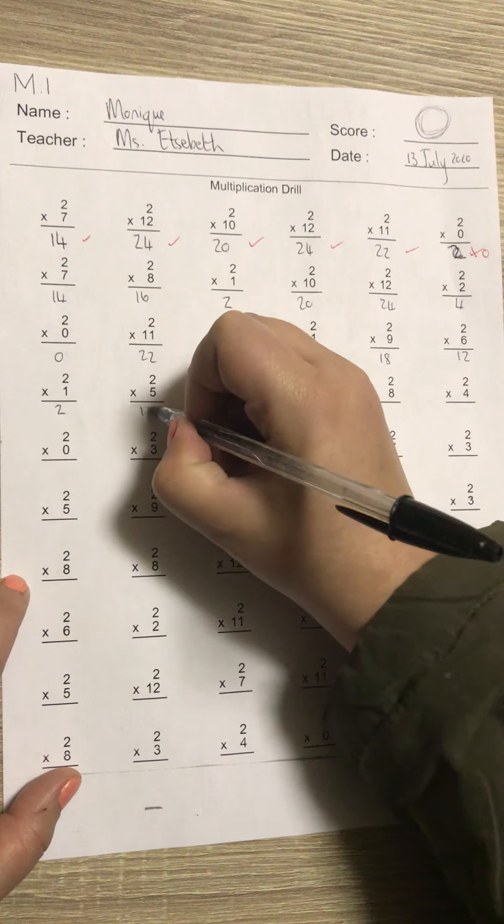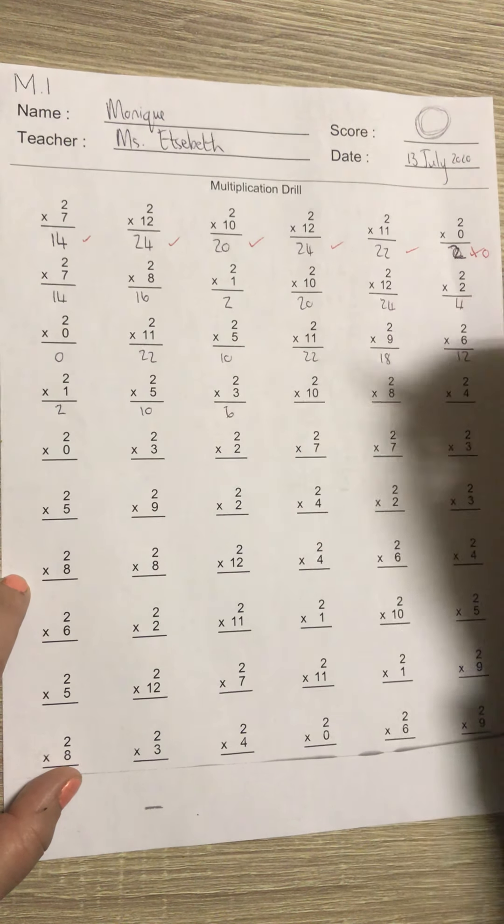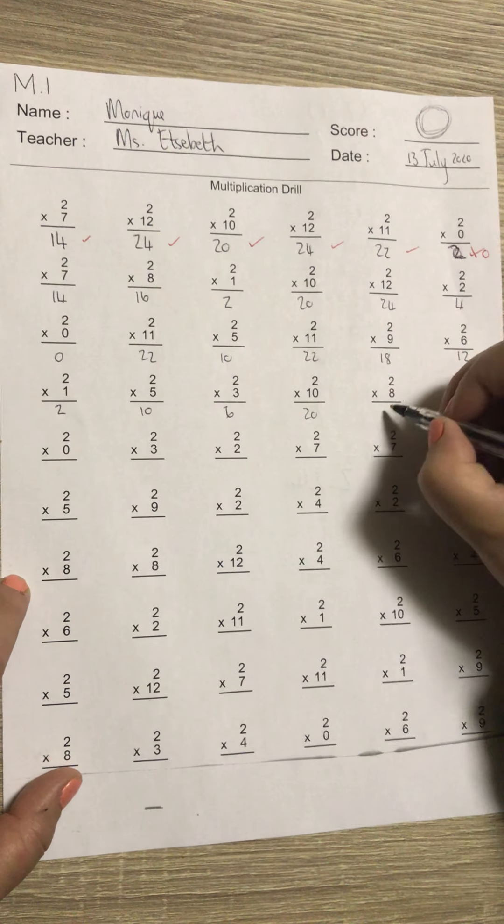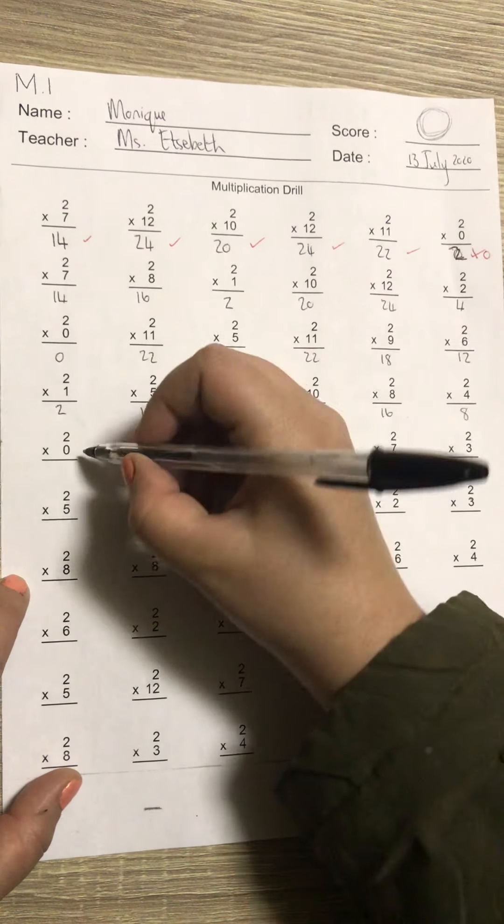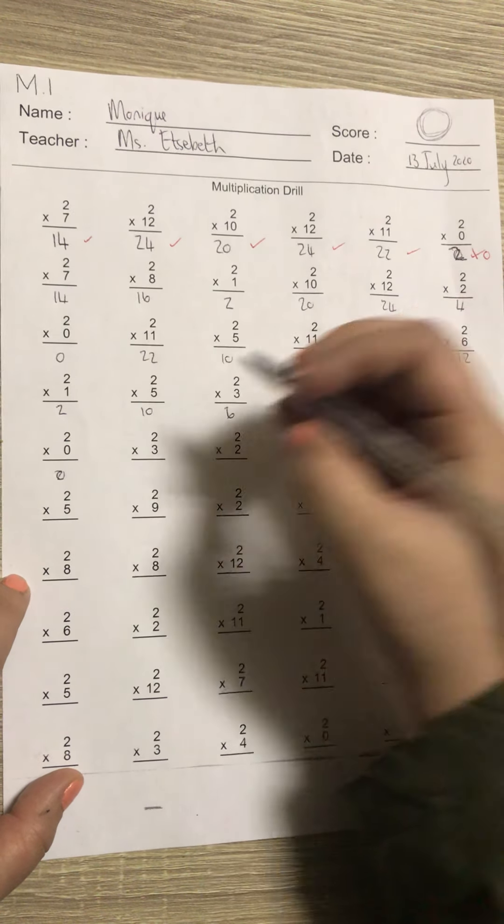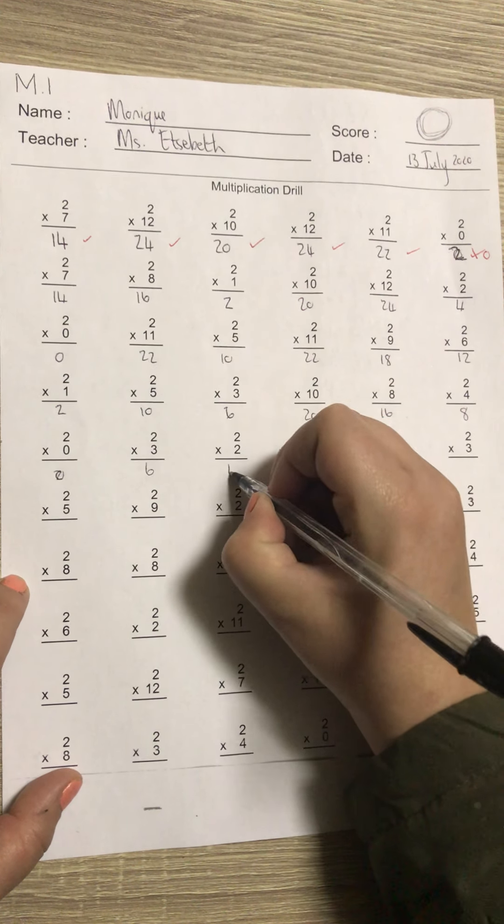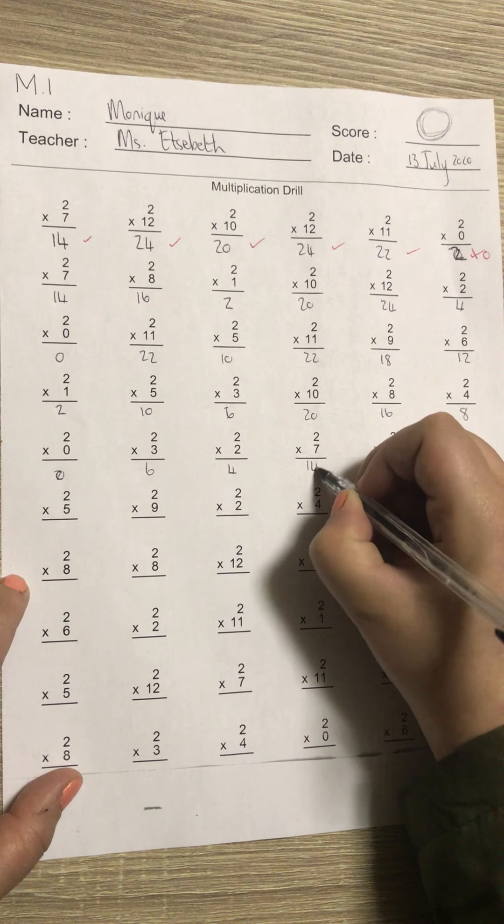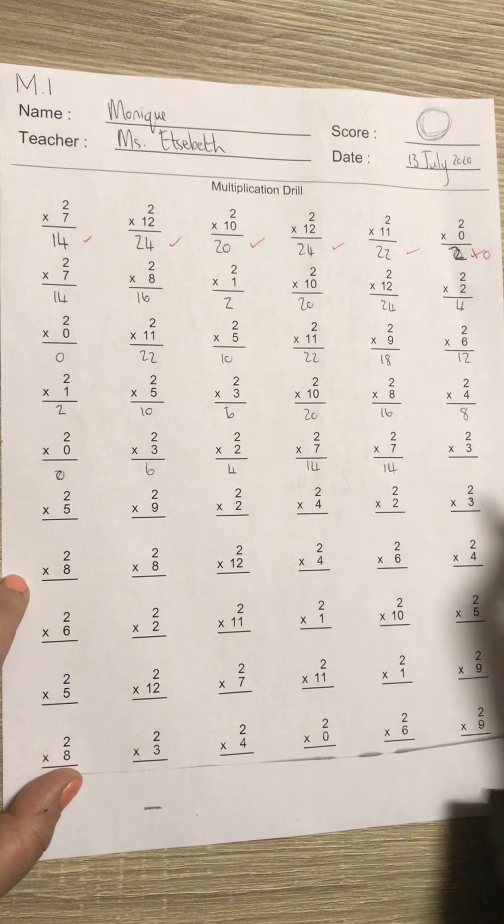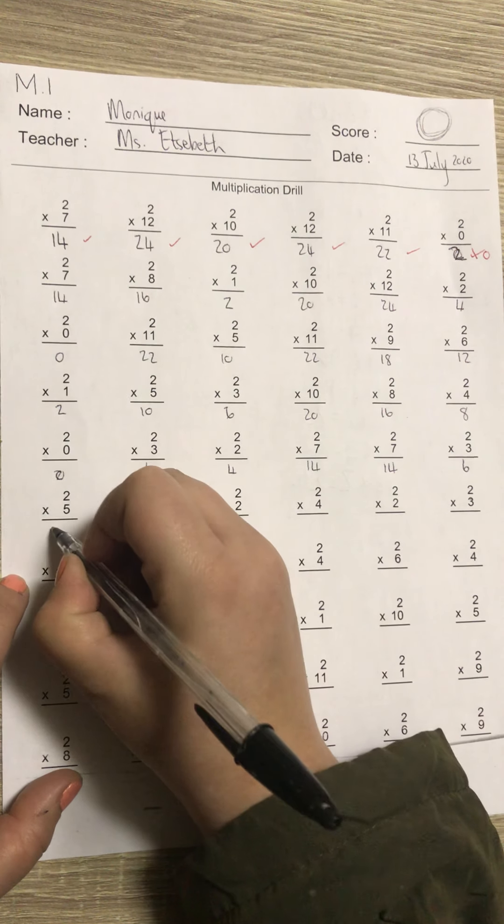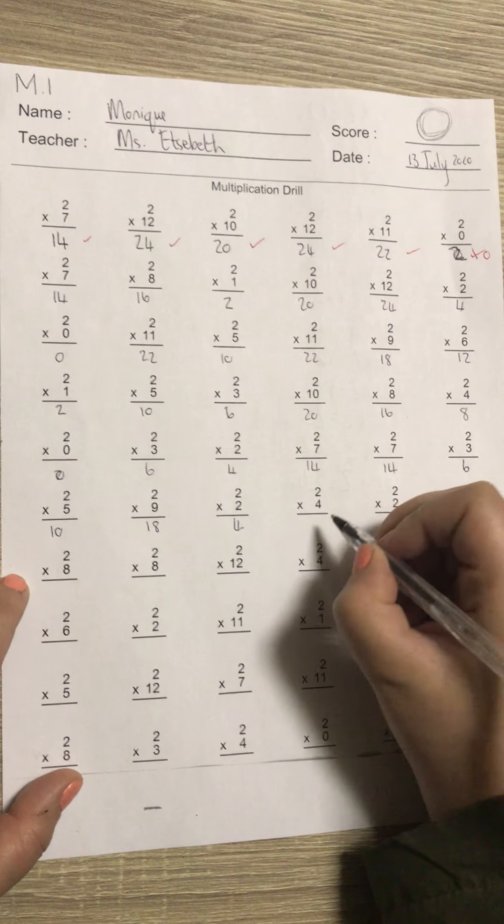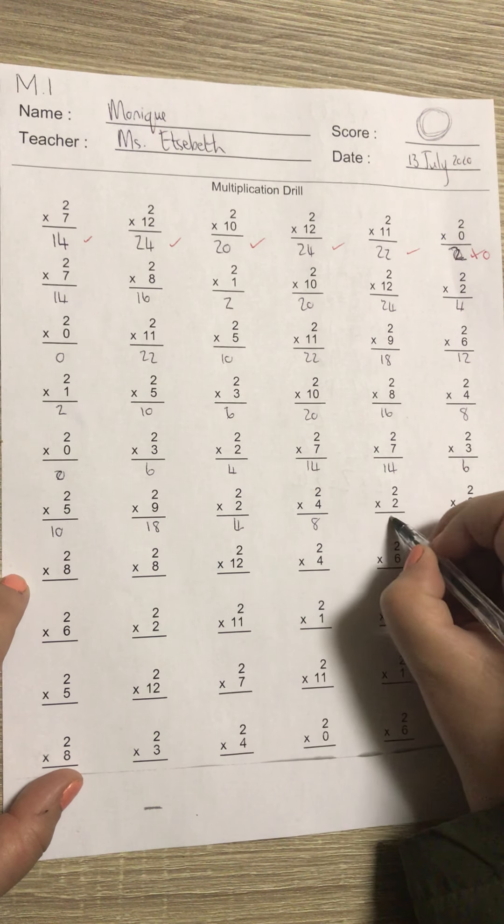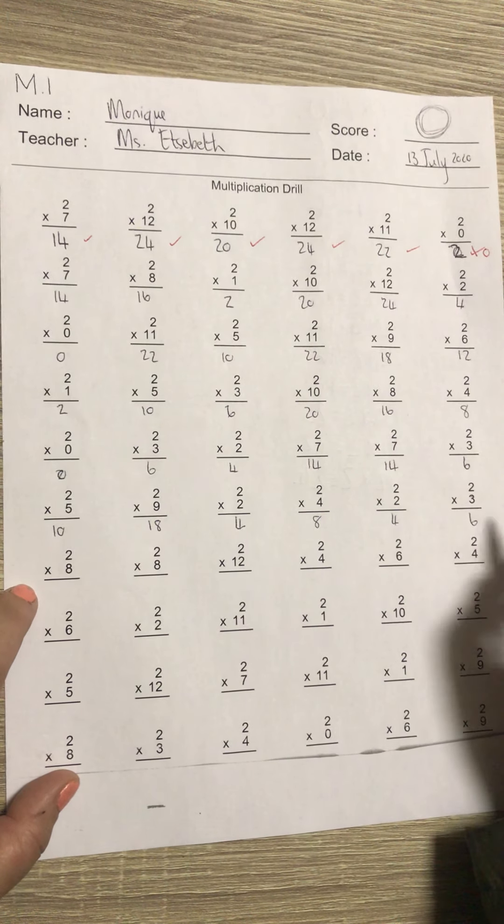Next line: two times one is two, two times five is 10, two times three is six, two times 10 is 20, two times eight is 16, two times four is eight. Two times zero is zero, two times three is six, two times two is four, two times seven is 14, two times seven is 14, two times three is six. Two times five is 10, two times nine is 18, two times two is four, two times four is eight, two times two is four, two times three is six.